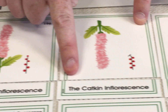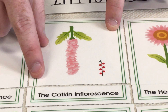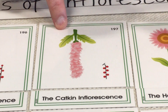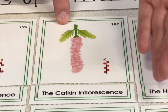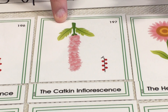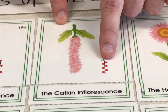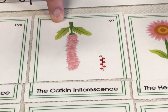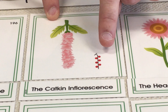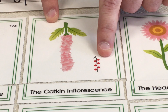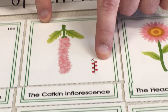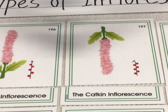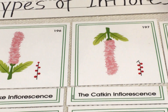The next is called the catkin inflorescence, and this is just like the spike inflorescence, except this one is hanging down instead of going up. So again, one peduncle going down and many buds attached to that peduncle. Spike and catkin are like pairs — only one peduncle.